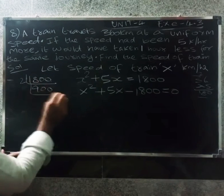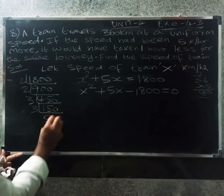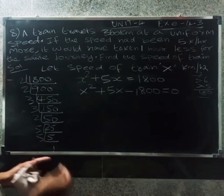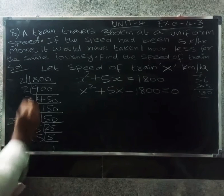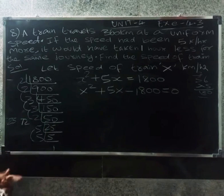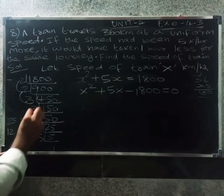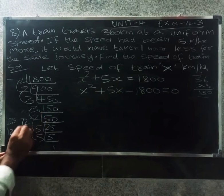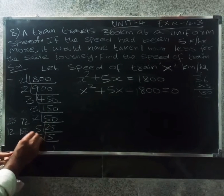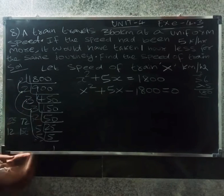Now factoring X squared plus 5X minus 1800 equals zero. We need two numbers that multiply to 1800 and differ by 5. That gives us 45 and 40. So X plus 45 into X minus 40 equals zero.